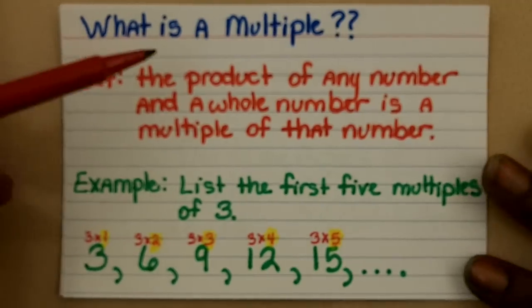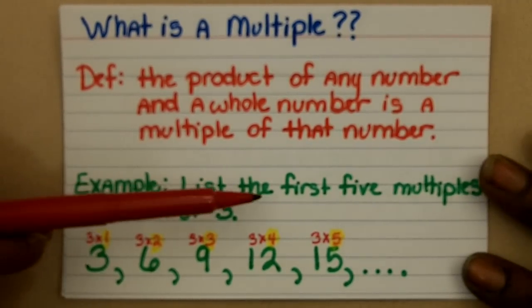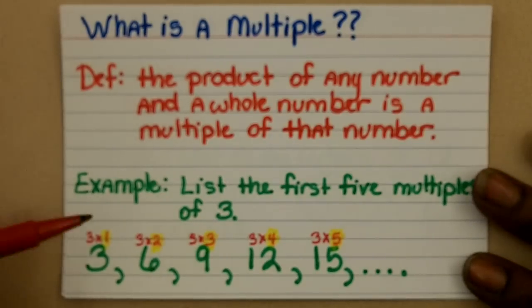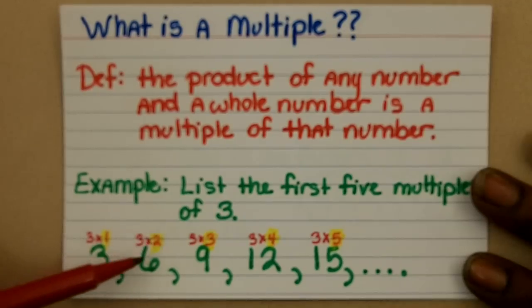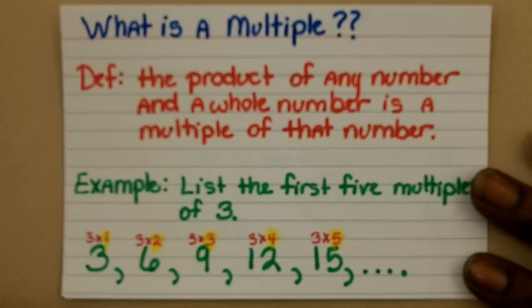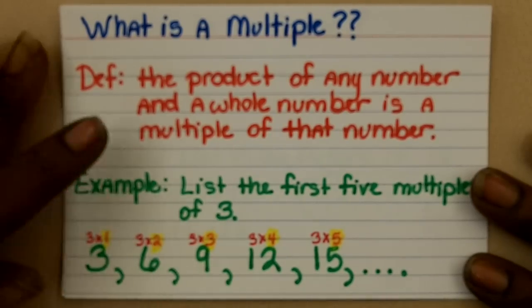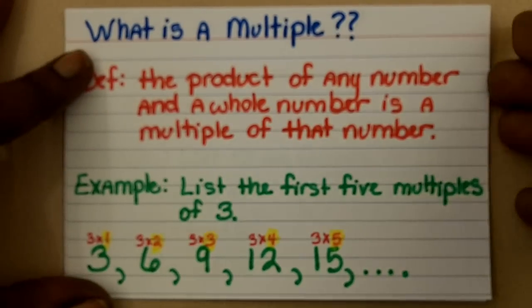Basically, maybe it would be best if I show you an example. If I asked you to list the first 5 multiples of 3 for example, well what you would do is multiply 3 times 1 for the first multiple, 3 times 2 for the second multiple, 3 times 3 for the third, so forth and so on, giving us 3, 6, 9, 12, and 15 as the first 5 multiples of 3.